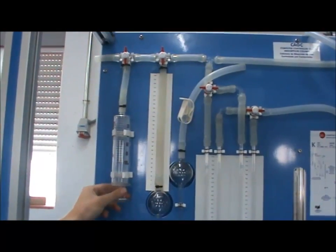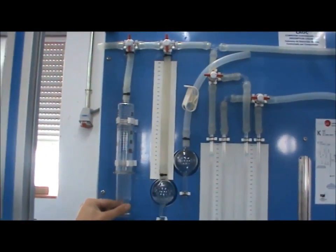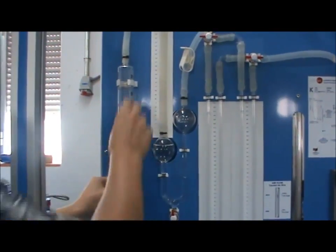Make sure valve V1 is open and push the plunger downwards, sucking the KOH solution up through the U-shaped vessels.